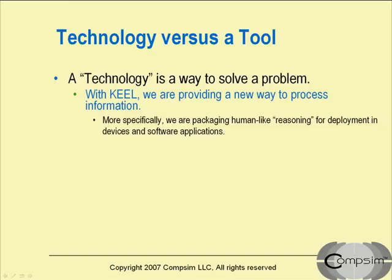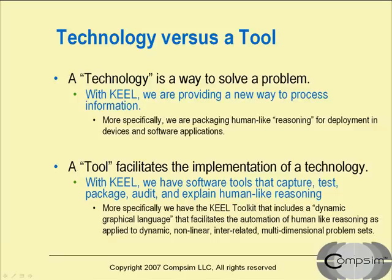Human experts utilize judgment and reasoning when they dispense their expertise. It is the expert's ability to interpret information and balance alternatives that provides value beyond just following a simple set of rules. A tool facilitates the implementation of a technology. For example, a hammer facilitates the bonding of pieces of wood, and a high resolution printing tool facilitates the manufacture of integrated circuits. With KEEL, we have software tools that allow us to capture and test the way that a domain expert interprets information and balances alternatives.